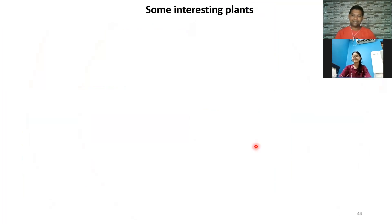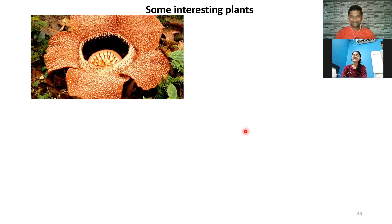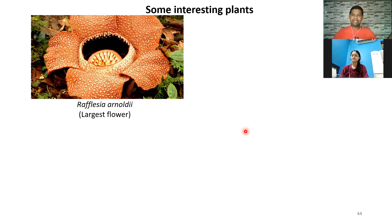Now let's look at some wonderful and interesting plants. One you have already experienced is the touch-me-not plant. There is also the world's largest flower — called Rafflesia arnoldii — which is about 1 meter in diameter. The best part is there is no stem, leaf, or nothing — it is a parasite. When this flower opens, it emits a rotten smell to attract carrion flies for pollination.